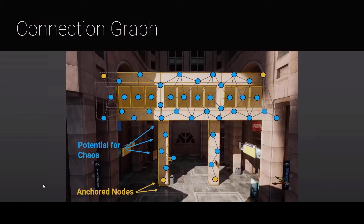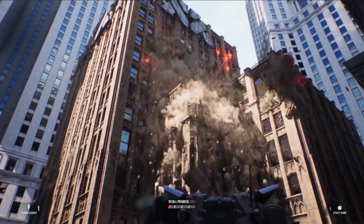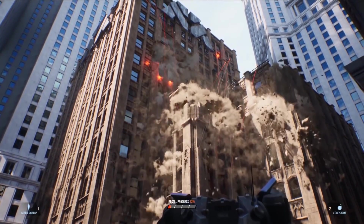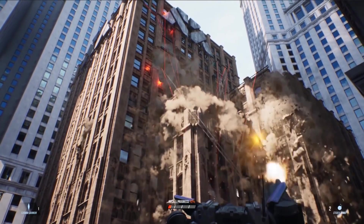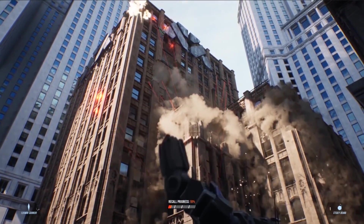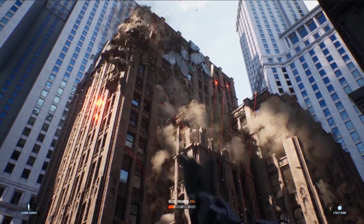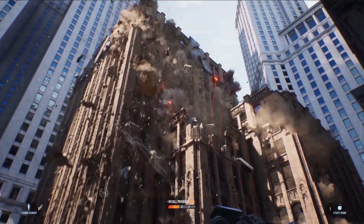Anchors can be used to lock portions of a geometry collection in place while the rest of the geometry collection breaks apart. Chaos solvers within the Chaos Destruction system can store important data, such as a list of collision, breaking, and trailing events as the simulation runs.